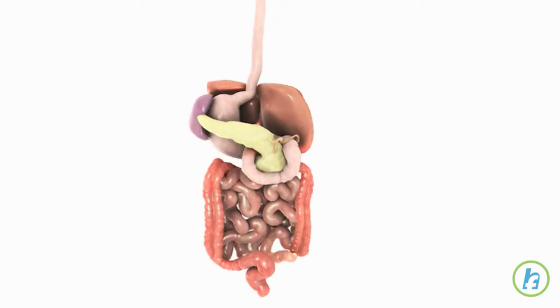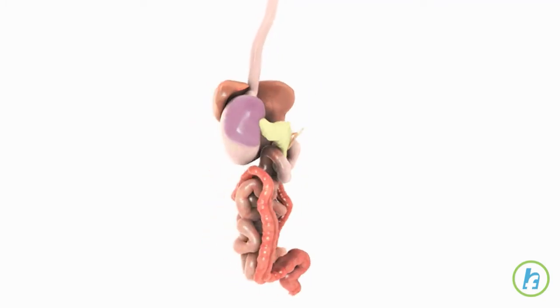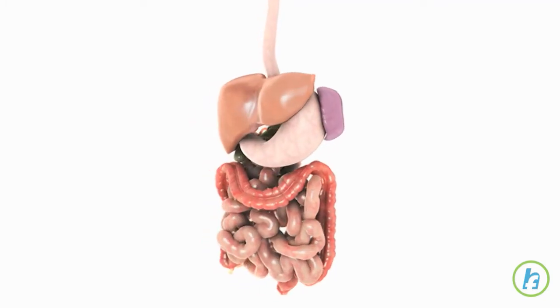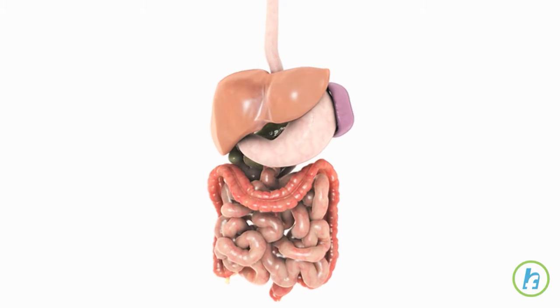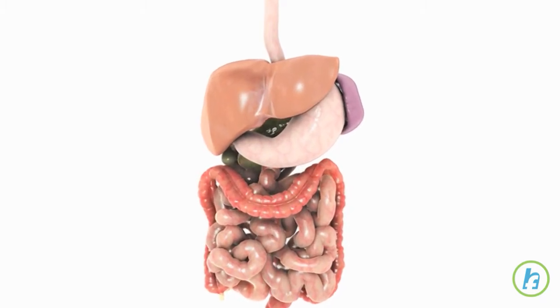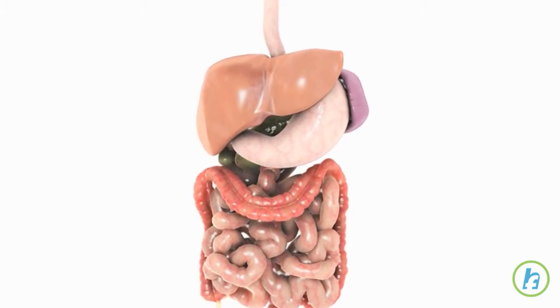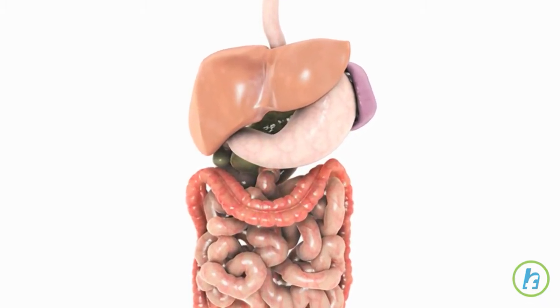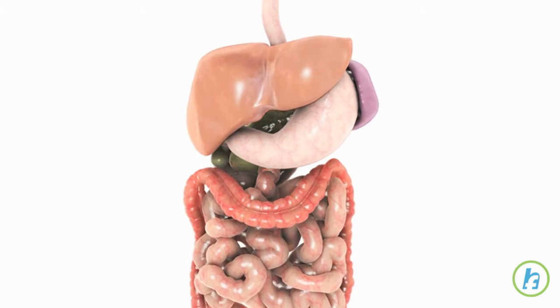The stomach collects food and uses enzymes to break down partially digested food into usable nutrients. The stomach has three layers of tissue: the innermost mucosal layer, the middle muscularis layer, and the outermost serosal layer.